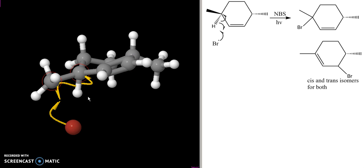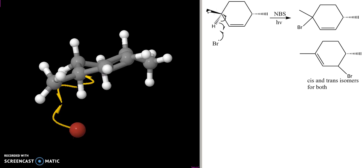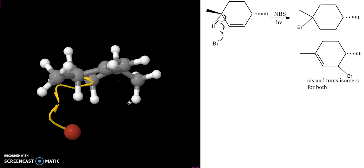Which means no matter which I started with, the cis or the trans, I get the same radical intermediate. And let's look at that radical intermediate.